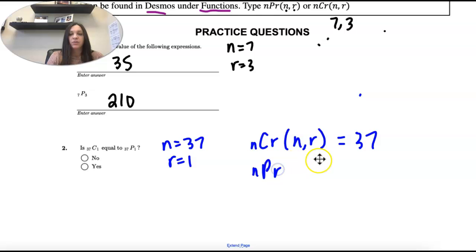And that's true, these are not always equal, like up here they weren't equal, but it's just because if we have a group of 37 and we're only picking 1, there's 37 different ways to pick 1 because there's 37 different options.